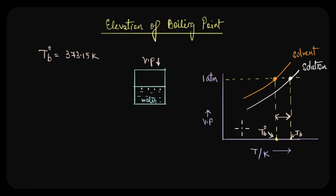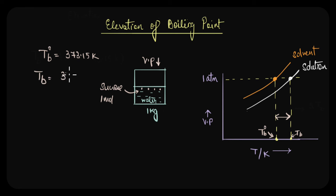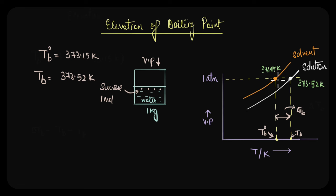Taking the example of water: the boiling point of pure water is 373.15 Kelvin. If the non-volatile solute added is sucrose, when we add 1 mole of sucrose to 1 kg of water, this solution now boils at 373.52 Kelvin. So while pure water boils at 100 degrees Celsius or 373.15 Kelvin, the solution boils at 373.52 Kelvin. The boiling point of the solution is always greater than that of the pure solvent. This difference in temperature — delta Tb, which is the boiling point of the solution minus the boiling point of the pure solvent — is called the elevation of boiling point.